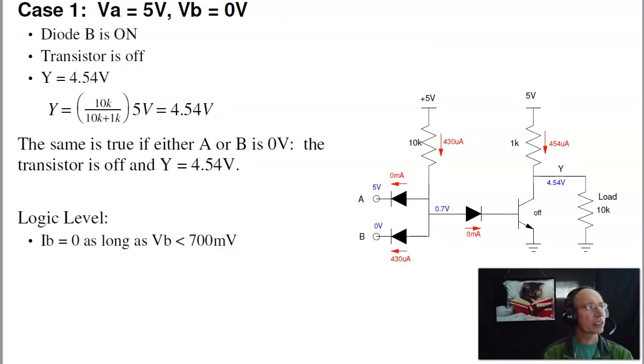So to analyze it, let's start out with one of these two is zero. In that case, diode B turns on, and I get 0.7 volts right here. No current goes to the right, I need 1.4 volts to turn on these two diodes, so the transistor turns off, and the output is high. By voltage division, I get 4.54 volts. And as long as the current goes left rather than right, this is logic level zero, so logic level zero is anything less than 0.7.